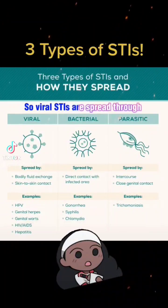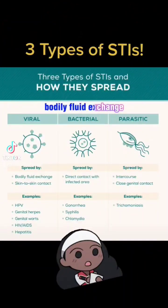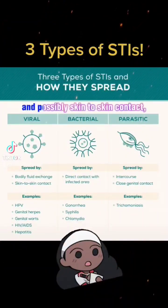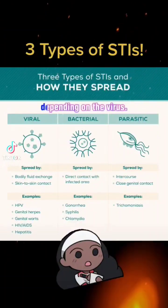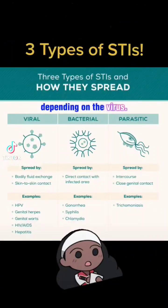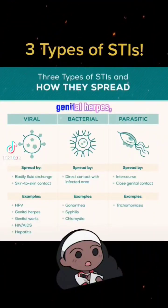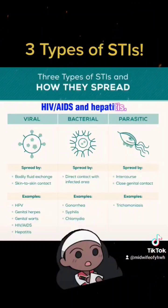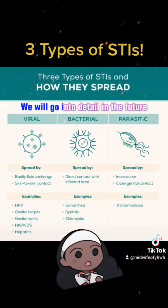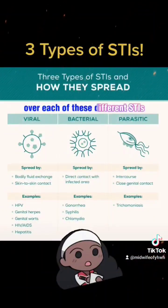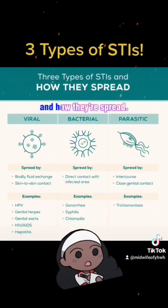Viral STIs are spread through bodily fluid exchange and possibly skin-to-skin contact, depending on the virus. Common examples include HPV (human papillomavirus), genital warts, genital herpes, HIV, AIDS, and hepatitis. We will go into detail in the future over each of these different STIs and how they're spread.